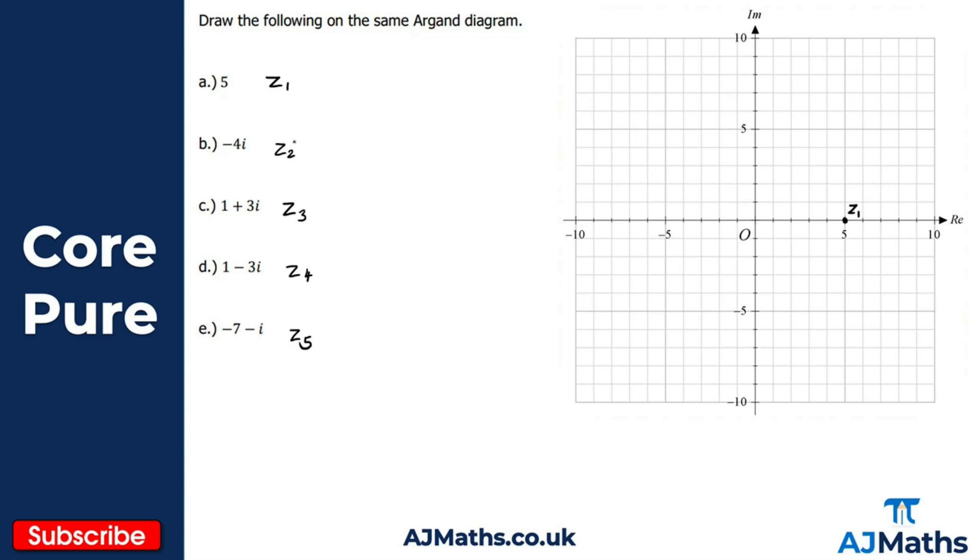z2 is minus 4i, so in this case there's no real part, this just has the imaginary part and that's minus 4i. We go down four units in the imaginary sense: one, two, three, four. We'll plot our point there, and that's z2.